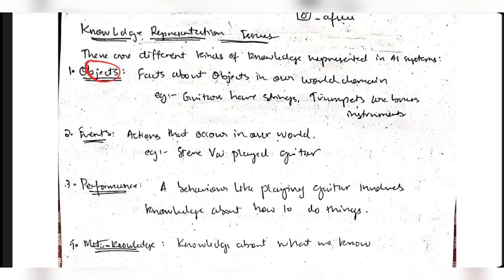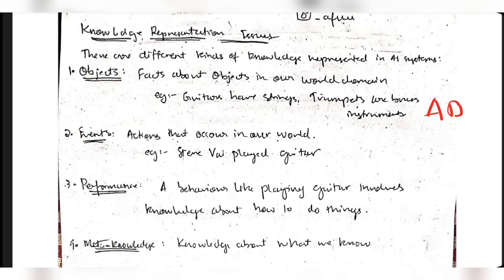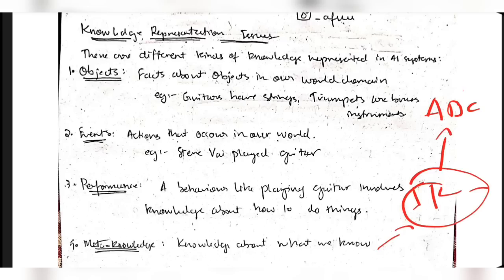Objects refer to things that exist - like a guitar having strings. Events are things that are happening. Performance is the behavior or activity, like playing the guitar. Meta-knowledge is knowledge about what you know - if you know ABC, then the meta-knowledge is that 'I know ABC.' That itself is meta-knowledge.